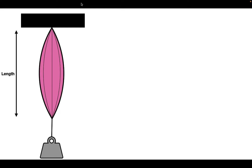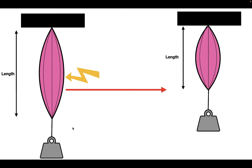Another thing we have to talk about is isotonic contractions. Imagine you have a muscle fiber attached to an immovable object on one end and to a weight on the other end. When you stimulate the muscle, both ends are pulled towards the center. But since the top end is attached to an immovable object, only the end attached to the weight moves towards the center. So when the muscle stimulates, it contracts, moving the weight up. An isotonic contraction is a contraction that occurs when a muscle has a constant load attached to it.